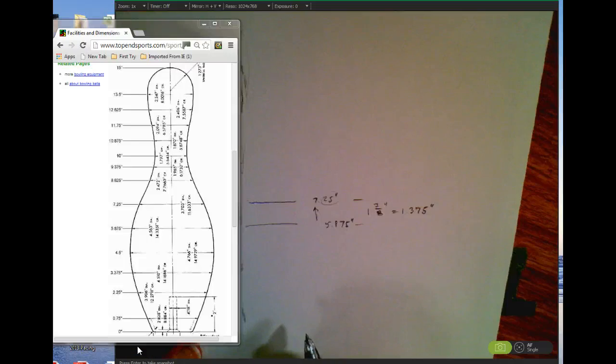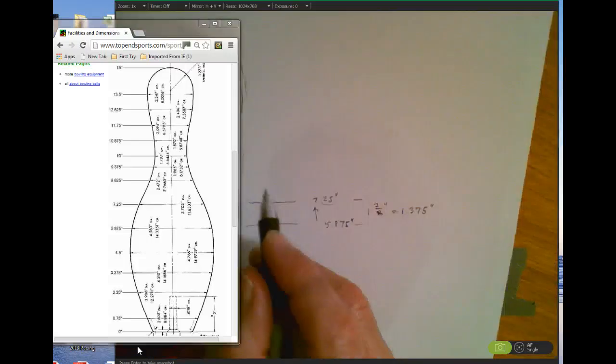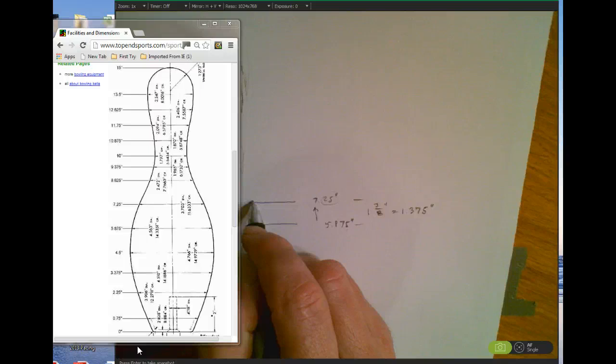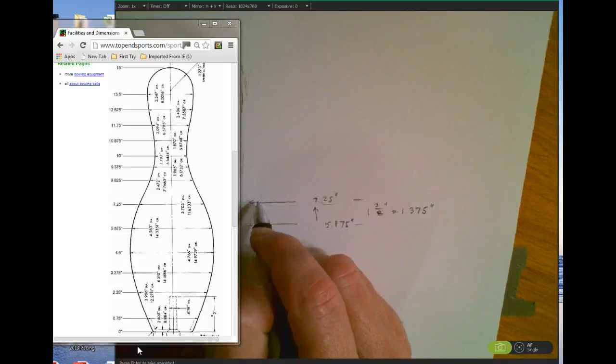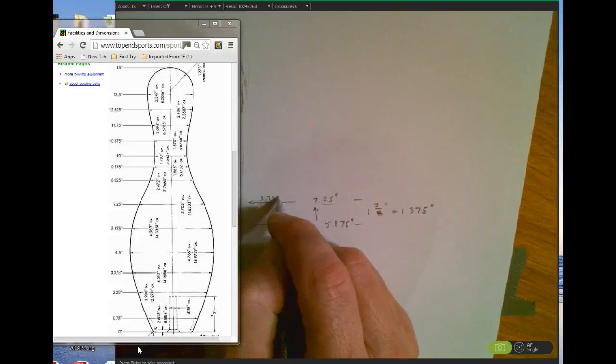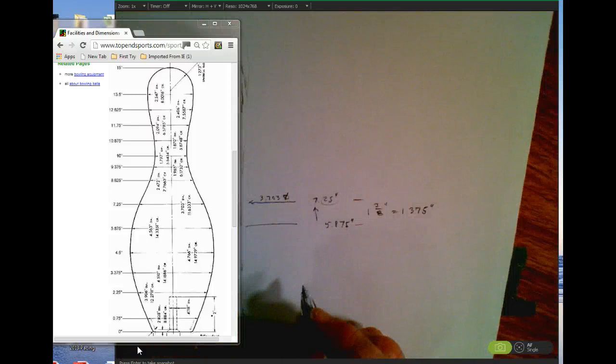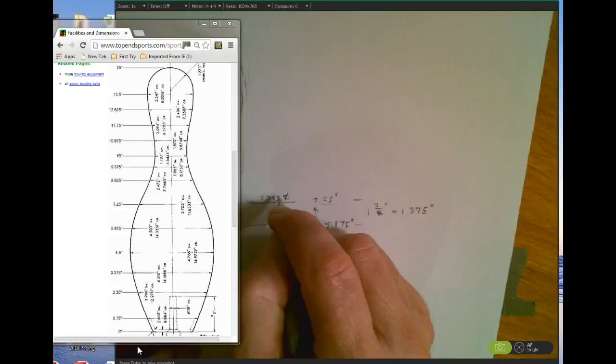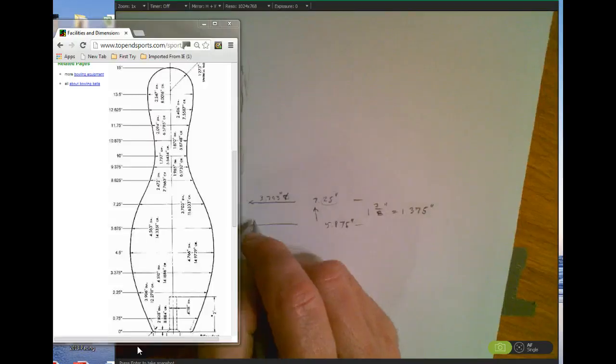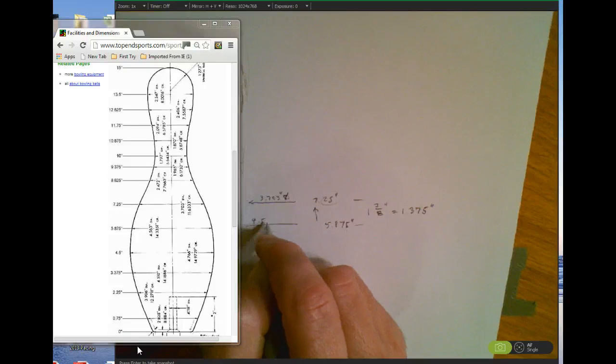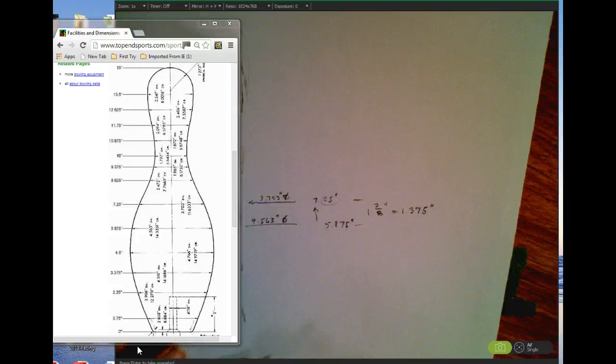So then we ask, well, our print shows us that this diameter right over here is 3.703 inches diameter. Put inches mark. And then this one here is 4.563 inches diameter.